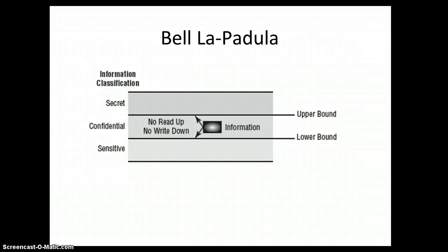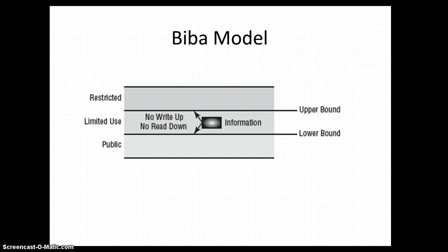The Biba model — I like to say Biba Las Vegas in my classes as an easy way to remember it — is for integrity, as opposed to Bell-LaPadula which was for confidentiality. It also has an upper and lower boundary, but the rules here are no write up and no read down. Information could not be read down, and you can't write up to possibly corrupt or damage the integrity of data at the upper or lower bounds.